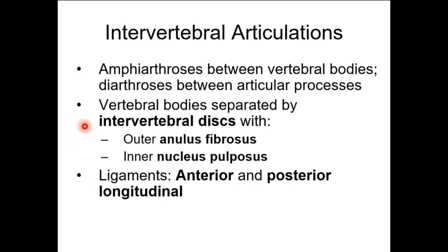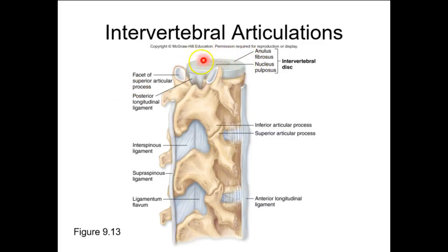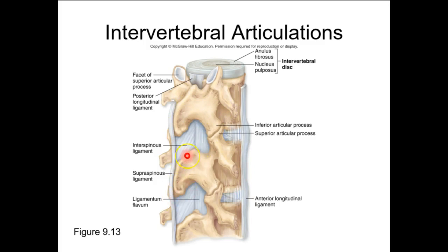Your intervertebral discs are made of fibrocartilage arranged in circumferential rings. The outer dense fibrocartilage portion is known as the annulus fibrosis, and in the middle you have a more fluid portion known as the nucleus pulposus. Your vertebrae also have many ligaments that stabilize them. A ligament between one spinous process and another would be called an interspinous ligament. On the anterior surface covering the vertebral column longitudinally, you'd have the anterior longitudinal ligament.